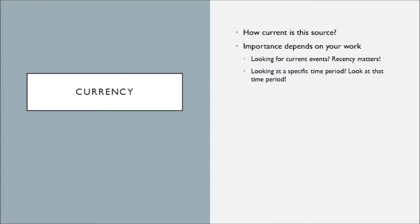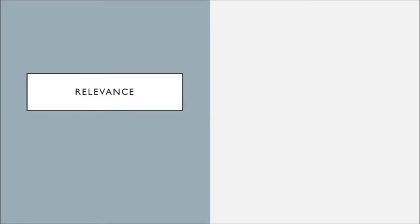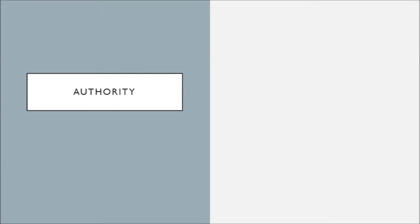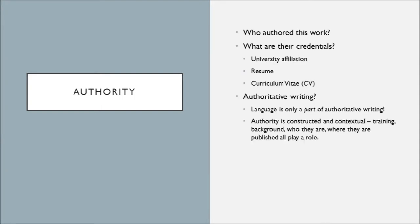For example, I remember going to a talk that discussed the history of science behind blood transfusions, and in that case, information from the 1800s is exactly what they were looking for. Two, you look at relevance — how relevant is it? How does it fit your current needs? The abstract or the introduction section will be a very good friend to you here. Authority looks at who wrote it. Who is the author? What are their credentials? Does their writing seem authoritative on the subject? Use your best judgment here.